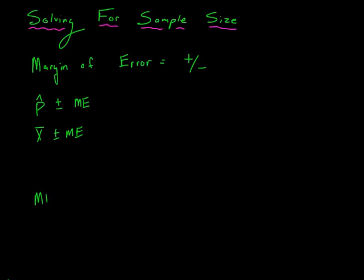So remember our two formulas for margin of error. When you're working with proportions, it's Z star times your standard error, which is p̂ q̂ divided by sample size. And that's what we're solving for is the sample size. Or when you're working with means, the margin of error is a t star times the standard deviation of your sample divided by the square root of your sample size. And again, we're solving for that sample size.